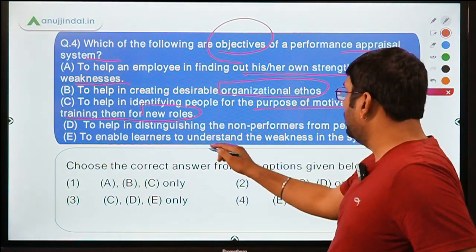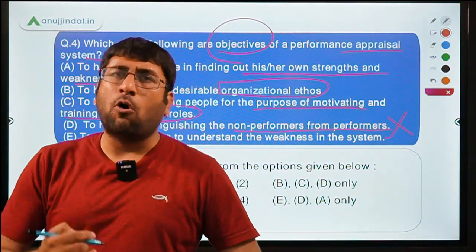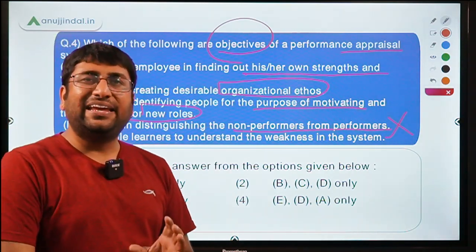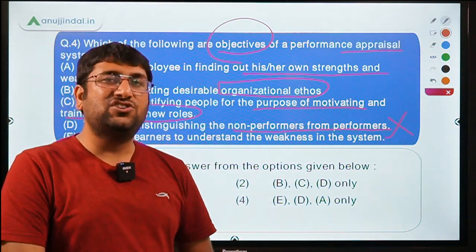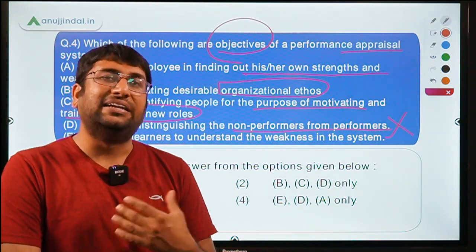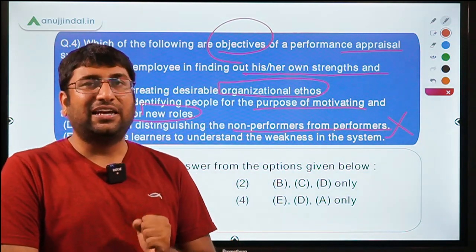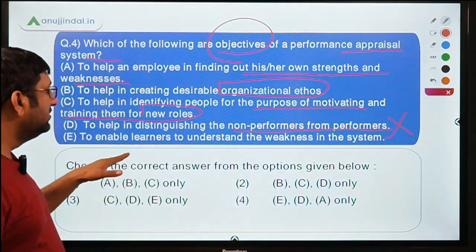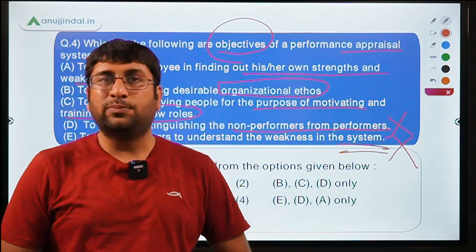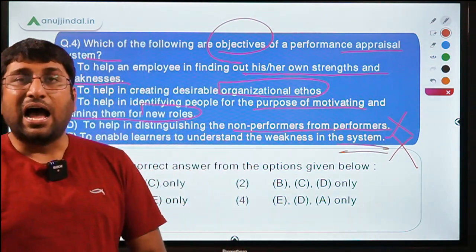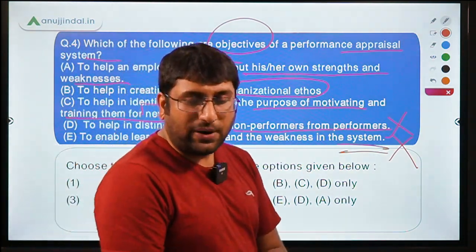Fourth: to help in distinguishing non-performers from performers — this is NOT one of the objectives, because performance appraisal is not about comparison or competition. Rather, it is an individualistic approach to measure performance and identify strengths and weaknesses. Fifth: to enable learners to understand weaknesses in the system — this is also not an objective, because we are doing employee performance appraisal, not evaluating system weaknesses.